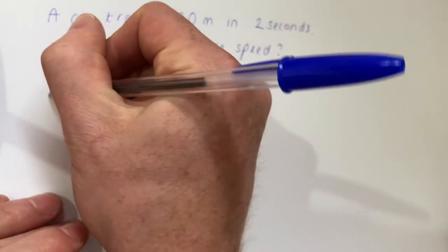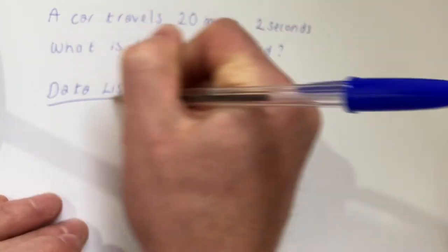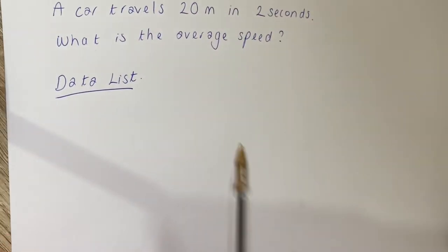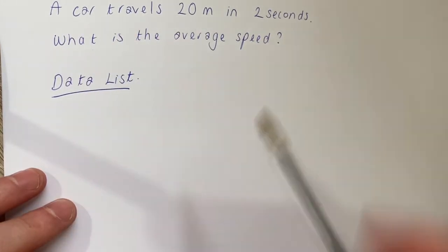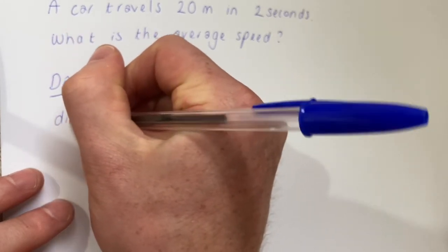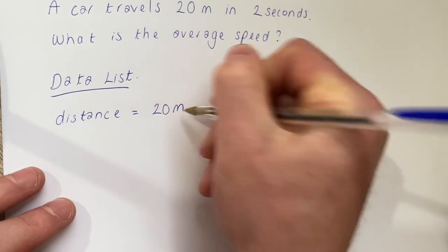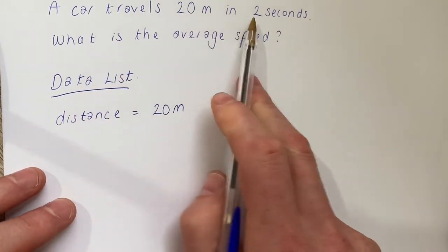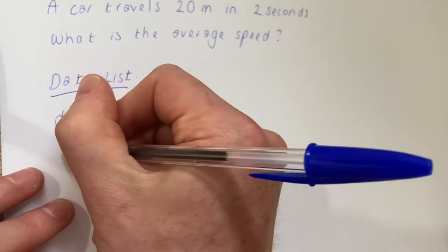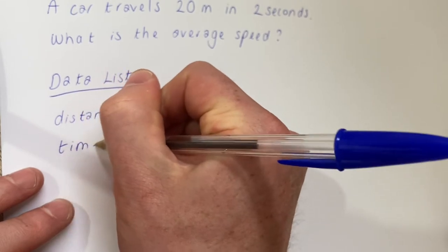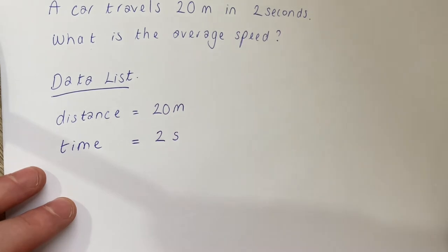The first thing to do is write down your data list. So this is all the information that you know from the question. We know a car travels 20 metres, so the distance the car travels is 20 metres. The second thing we know is that it takes 2 seconds to travel that distance, so the time it takes to travel 20 metres is 2 seconds.